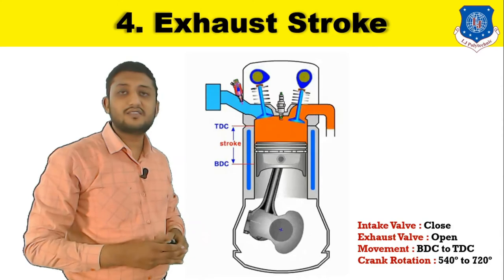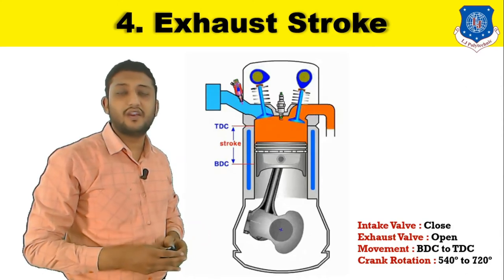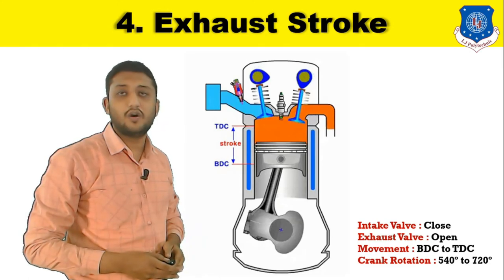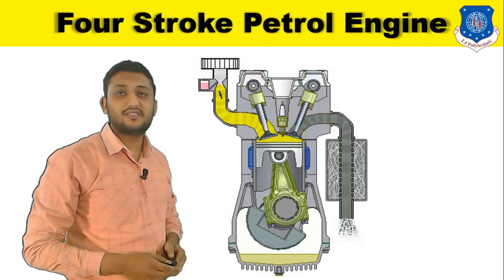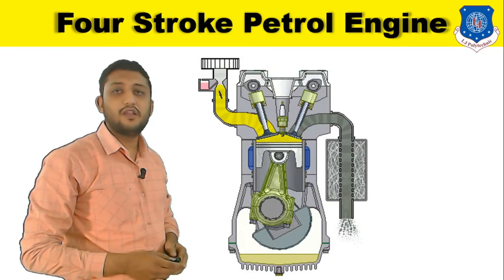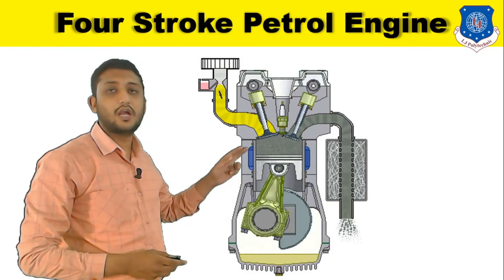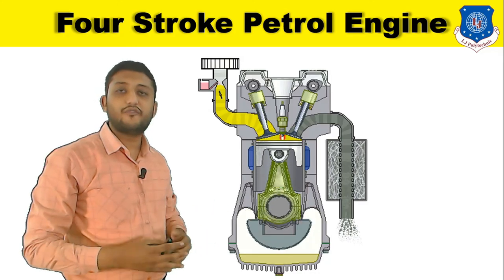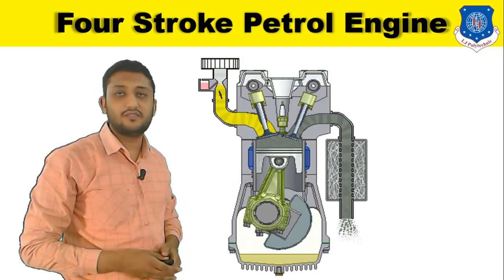During the exhaust stroke, the crank angle is about 720 degrees and the exhaust valve will be in the open position. This completes the cycle of the 4 stroke petrol engine — suction, compression, power, and exhaust. All 4 strokes have been explained in this video.